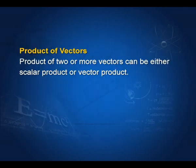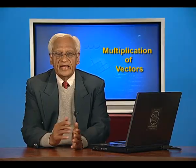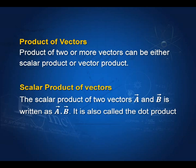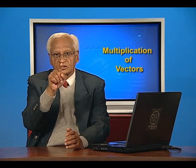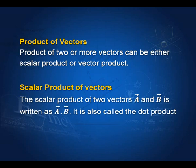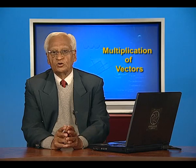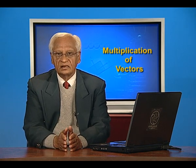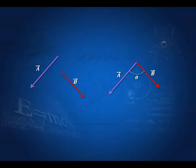Now we come to the product of a vector by another vector. Here again, there are two types. One is the scalar product of vectors. As the name suggests, the scalar product of two vectors is a scalar. The scalar product of two vectors a and b is written as vector a dot vector b. It is also called the dot product, because we have put a dot between vector a and vector b to indicate the scalar product.